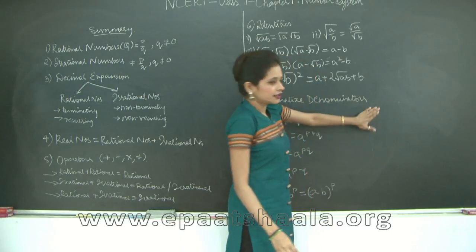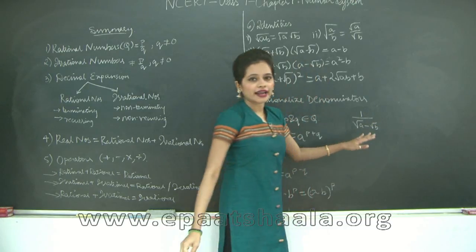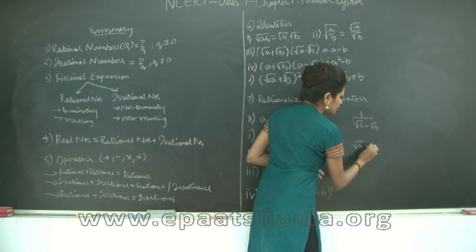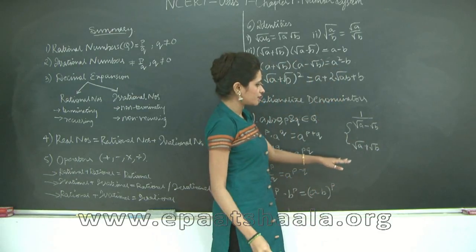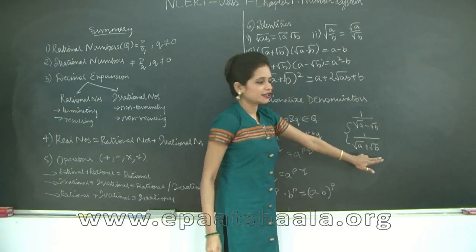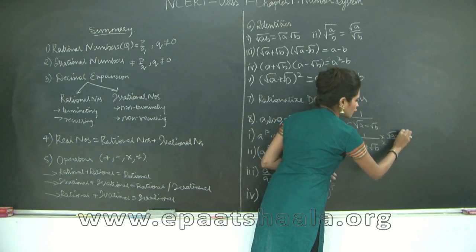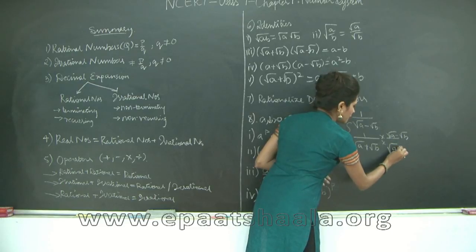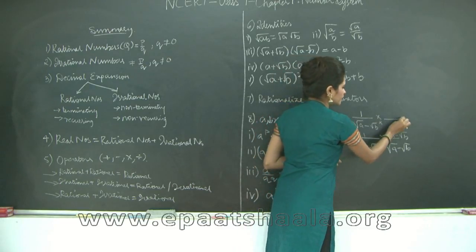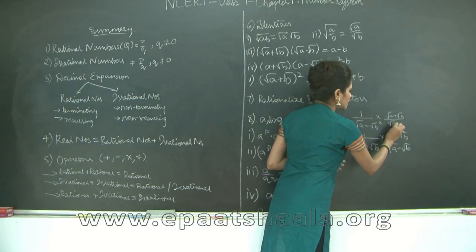Similarly, if you have two terms in your denominator, say (√a − √b), the rationalizing factor is the same two terms with a different sign — so (√a + √b) and (√a − √b) are rationalizing factors of each other. If you have (√a + √b) in the denominator, multiply by (√a − √b), and if you have (√a − √b), multiply and divide by (√a + √b).